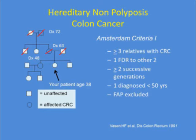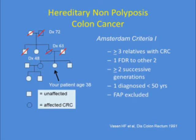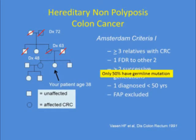The Amsterdam Criteria 1 pedigree is a 3-2-1 rule: three relatives with colorectal cancer, two successive generations, and one individual with cancer who is first-degree to the other two. An individual is diagnosed less than age 50, and FAP is excluded. However, about 50% of these individuals don't have a mutation, and accuracy is diminishing as families get smaller.